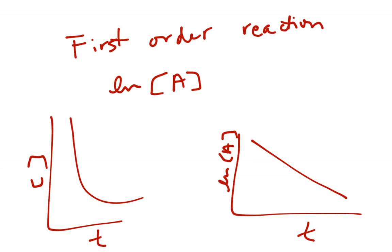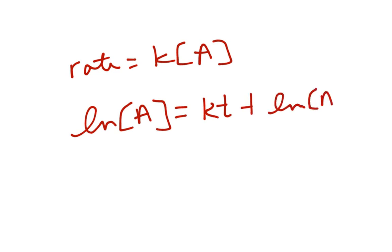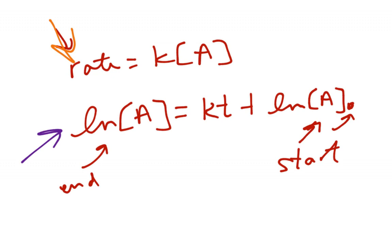So that is going to change our equation from the nice and simple rate equals k into something that looks like the natural log of my concentration is equal to negative k times the time plus the natural log of the concentration I started with. So this is the concentration that I end with, this is the concentration that I start with. That's what this little zero here means. This is the differentiated rate law, this is the integrated rate law.